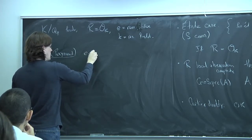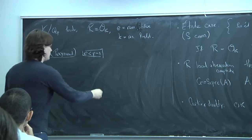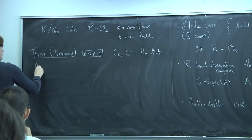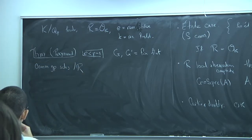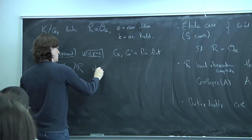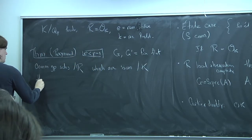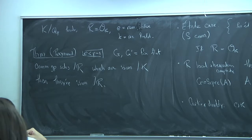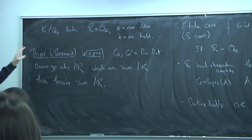Raynaud's theorem applies in the setting where the ramification index e is less than p minus 1. It says that if you have two finite flat commutative group schemes over R which are isomorphic over K, then they're isomorphic over R. In other words, if you have a model over K and can extend to R, you can extend to R in a unique way, in this setting of small ramification.